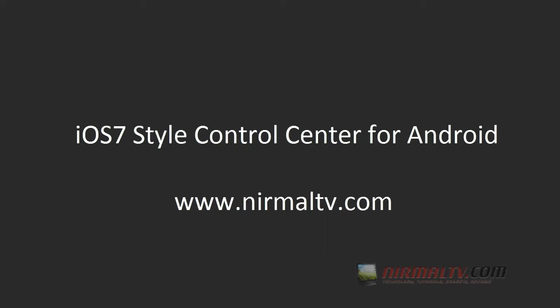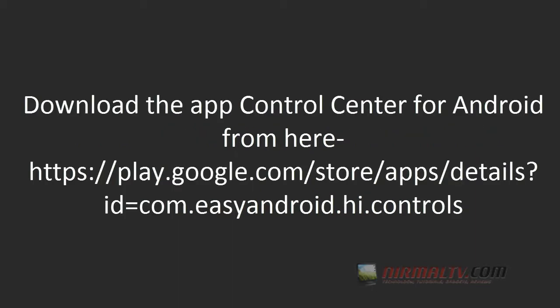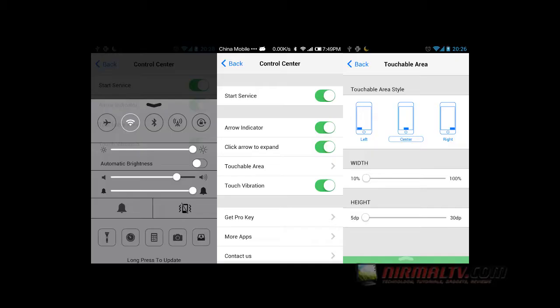Hey friends, today we will see how to get the iOS 7 style control center for Android phones. To get started, first you need to download and install the app from here. Once installed, you can see the app has a very similar interface to iOS 7.